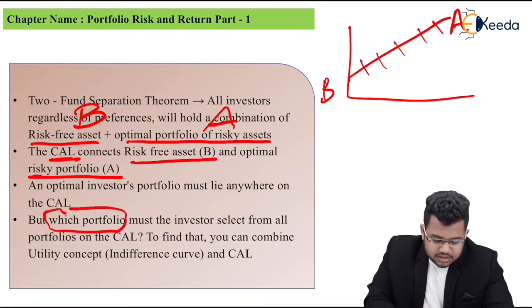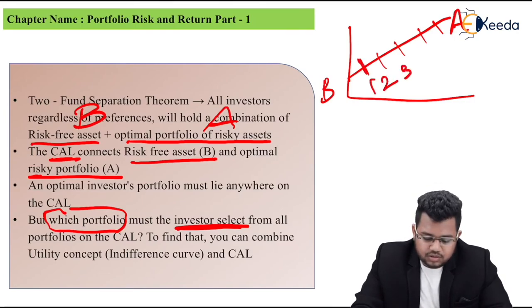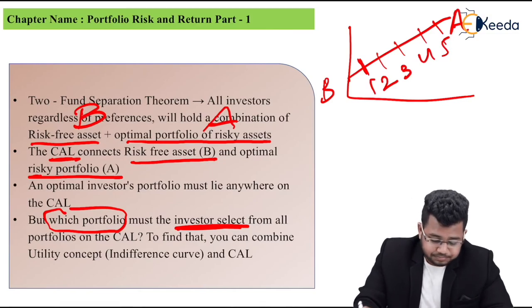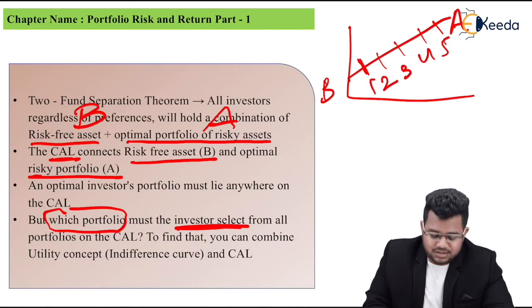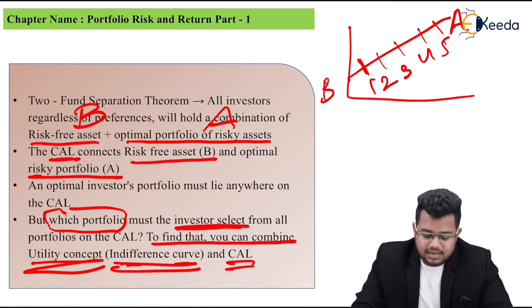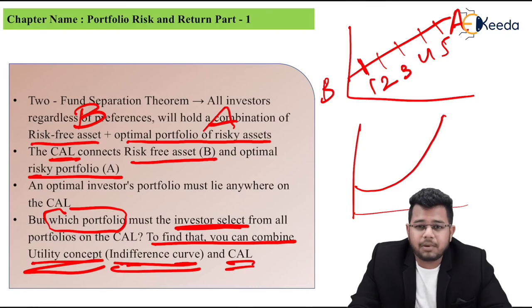But which portfolio must the investor select? All these lines you see - one, two, three, four, five, etc. - so many portfolios will lie on the CAL. So which portfolio should be chosen, that is the question. Again the last point: but which portfolio must the investor select from all the portfolios on the CAL? To find that, you can combine utility concept, which is indifference curve, and the CAL. Remember, this was the indifference curve we saw, and this upper diagram is the CAL. Both of these need to be clubbed together, then you will get your optimal portfolio.